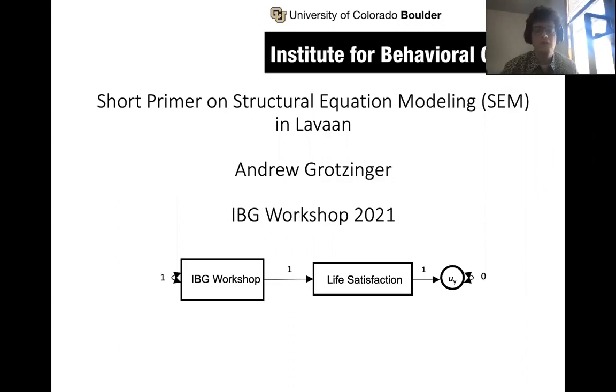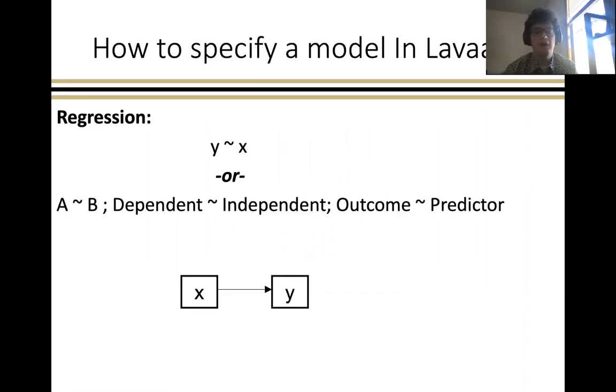To start, let's go over some of the basic model syntax for Lavaan, beginning with how to specify a regression relationship, which you could write as y tilde x, which visually depicted as a path diagram would mean x predicting y with this single-headed arrow.